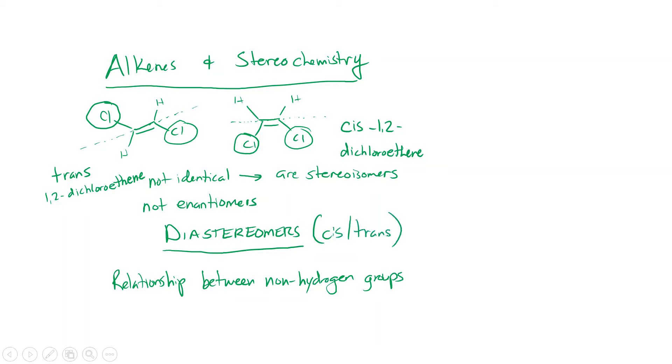Cis means that those chlorines are on the same side of the double bond. Trans means they are on opposite sides. So cis and trans are diastereomers of each other. This works great. This is nice, pretty easy to do. Just look at how the non-hydrogen groups are related to each other unless we come across a molecule that doesn't have hydrogens. So what if we have an alkene that looks like this?